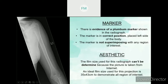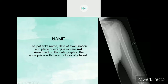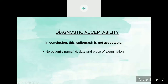For aesthetics: the film size used for this radiograph cannot be determined because the picture is taken from the internet. But an ideal film size for this projection is 35×43 cm to demonstrate all regions of interest. For patient information: the patient name, date of examination, and place of examination are not visualized on the radiograph. In conclusion, for diagnostic acceptability, this radiograph is not acceptable because there is no patient name, ID, date, and place of examination. A repeat is required, and the patient name and ID must be included on the radiograph during exposure. That's all for the AP projection of humerus.